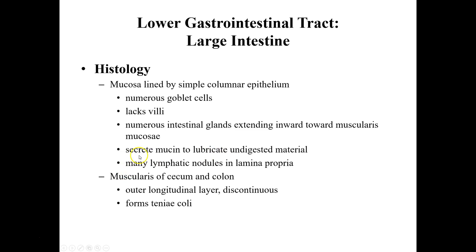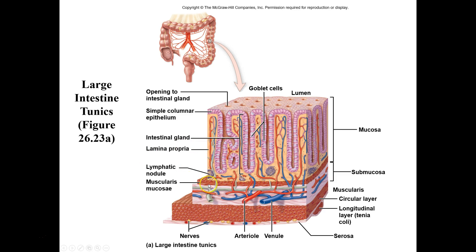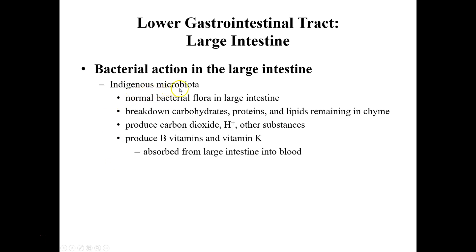Mucus cells secrete mucus to lubricate the large intestines. We have two layers of muscularis that allow for movement. You can see the different layers — the muscularis mucosa, the circular and longitudinal muscles, and the inner mucosal layer. There are also lots of different bacteria in this region. The main bacteria typically discussed are E. coli, which are found in the large intestines, but there are many other bacteria as well.